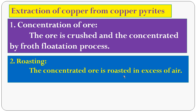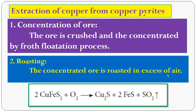The second step is roasting. The concentrated ore is roasted in the presence of air. During roasting, in the presence of oxygen, the impurities — sulfur (S), phosphorus (P), arsenic (As), and antimony (Sb) — are oxidized into oxides and removed. Copper pyrites reacts with oxygen to form sulfides of copper and sulfides of iron, plus sulfur dioxide gas.